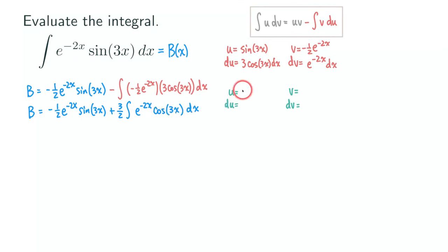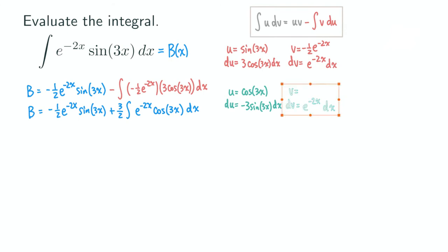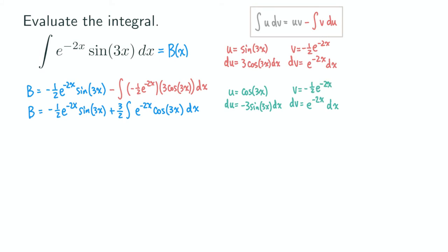So we are going to let u be cosine 3x. The dv would again be the exponential function, e to the negative 2x dx. Then we find du and v. Here du is negative 3 sine 3x dx. And v is the same as before — we already computed it — so v equals negative one half e to the negative 2x.